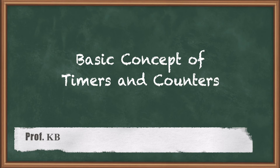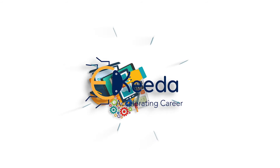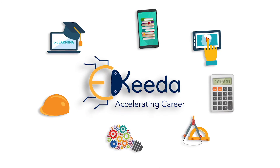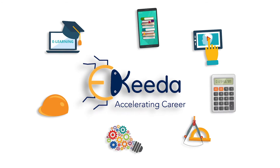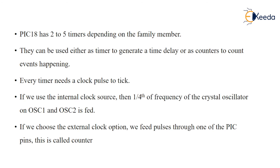Hello students, today we will see the basic concepts of timer and counter. PIC18 has two to five timers depending on the family. In PIC18F458 we have timer 0, timer 1, timer 2, and timer 3 — four timers in total. They can be used either as a timer to generate a time delay or as a counter to count events.